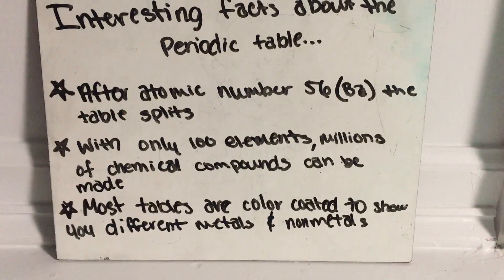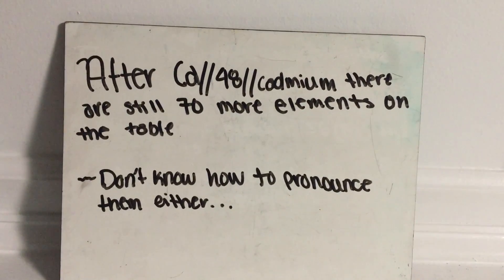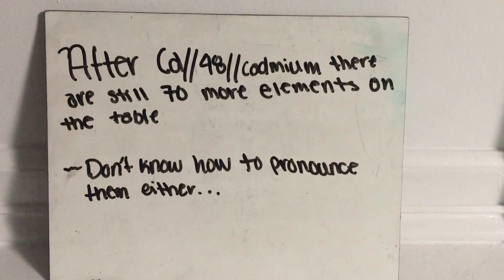Most tables are color coded to show you different metals and nonmetals. After element 48, cadmium, there are still 70 more elements on the table.